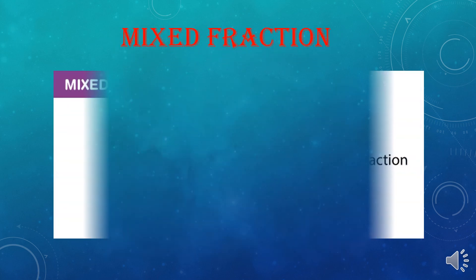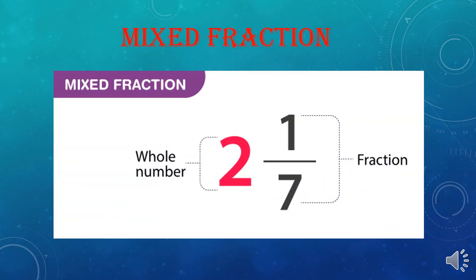A Mixed Fraction is a fraction in which there is a whole number and one fraction, and we read it like '2 whole 1 by 7.' That means 2 is a whole number and there is a fraction, so we call it a Mixed Fraction because it's a mixture of a whole number and a fraction.